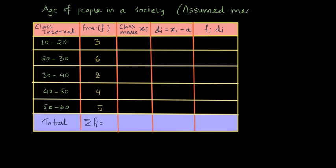We have some data of age of people in society. The class interval shows the ages here and the frequency shows the number of people in that age range.